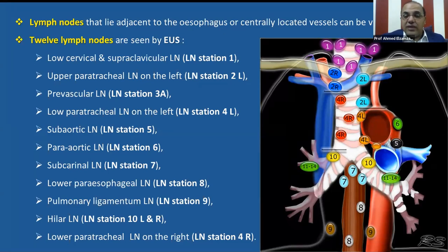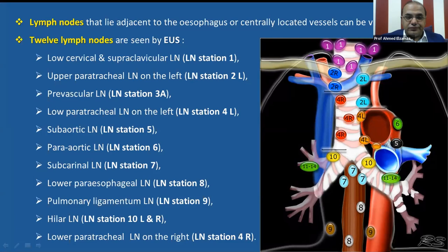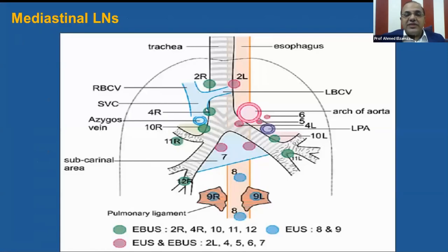The 12 stations visible by EOS are: station 1 in the root of the neck; station 2 left; station 3A; station 4L; station 5 sub-aortic lymph node; station 6 para-aortic lymph node; station 7 subcarinal lymph node; station 8 lower para-esophageal lymph node; station 9 pulmonary ligament lymph node; stations 10L and 10R hilar lymph nodes; and station 4 right. This figure shows mediastinal lymph node examination by EOS only, EBUS only, and with both combined.